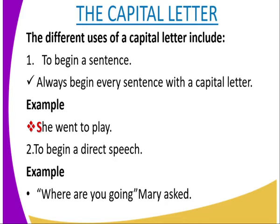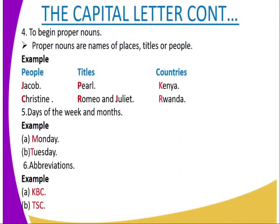Capital letters are also used to begin a direct speech. A direct speech is when the speaker is communicating from the first person point of view to the second person. Example: 'Where are you going?' Mary asked. Capital letters are also used to begin proper nouns — names of places, titles, or people. Examples: people such as Jacob, Christine; titles such as 'The Pearl', 'Romeo and Juliet'; countries such as Kenya, Rwanda, Uganda, Tanzania.